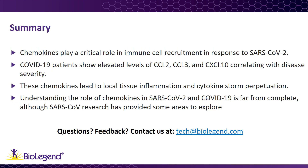Chemokines play a critical role in the recruitment of immune cells to the site of SARS-CoV-2 infiltration. Early characterization of COVID-19 patients shows elevated levels of key chemokines — CCL2, CCL3, and CXCL10 — all correlating with disease severity. Their increase leads to local tissue inflammation and perpetuation of the cytokine storm. While the explicit role each of these chemokines plays in the immune response to SARS-CoV-2 and COVID-19 is being defined, initial hypotheses are being developed based on the understanding of their role in similar viral responses, including SARS-CoV.